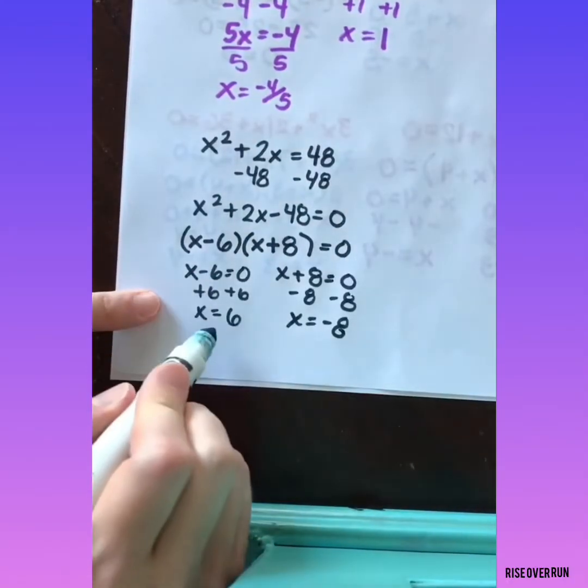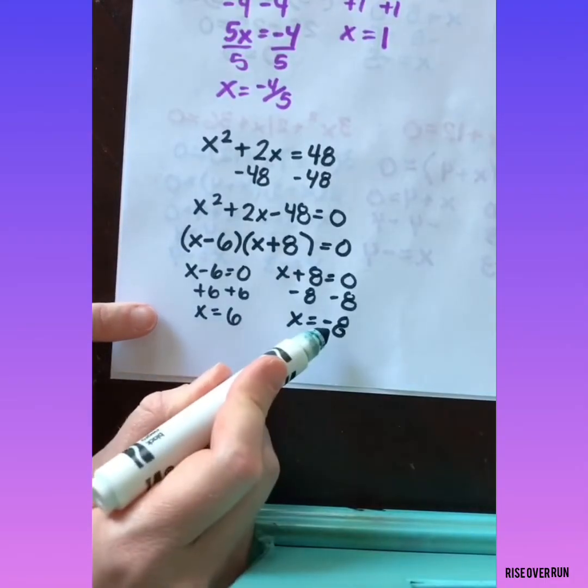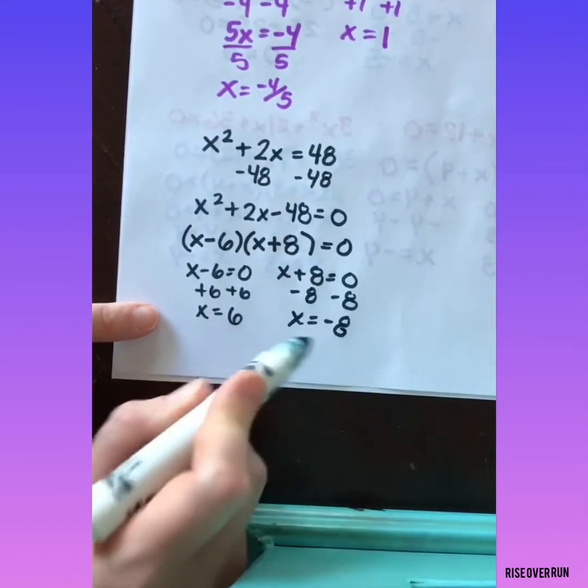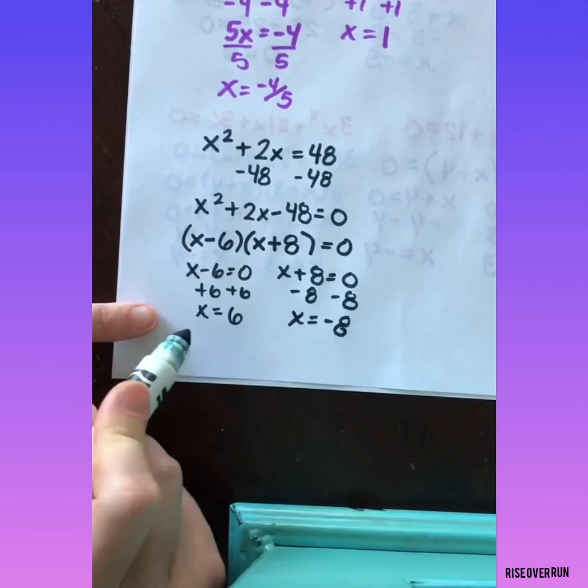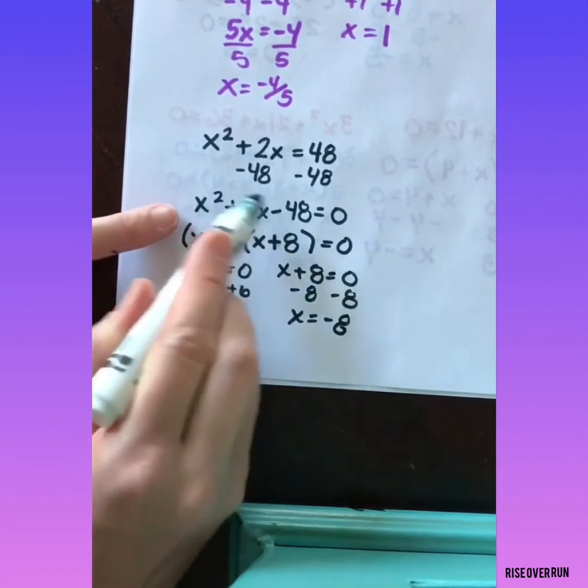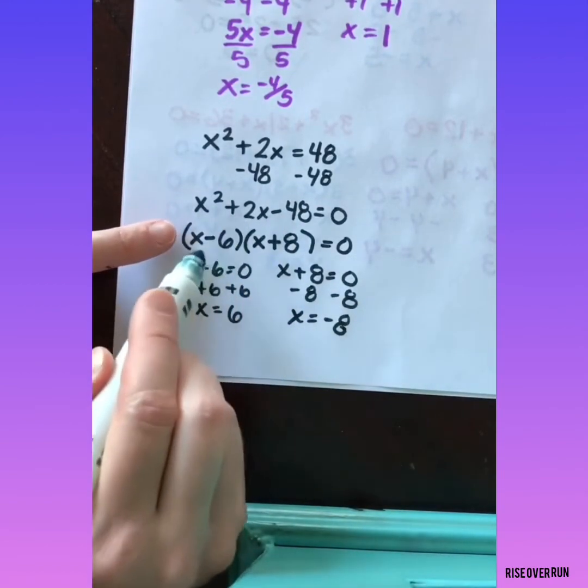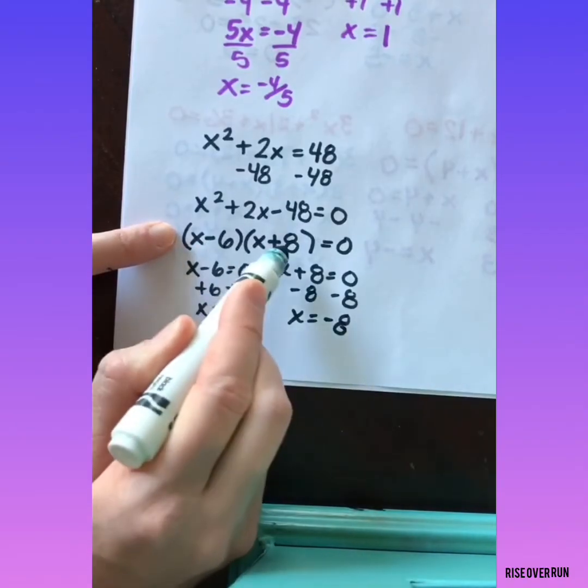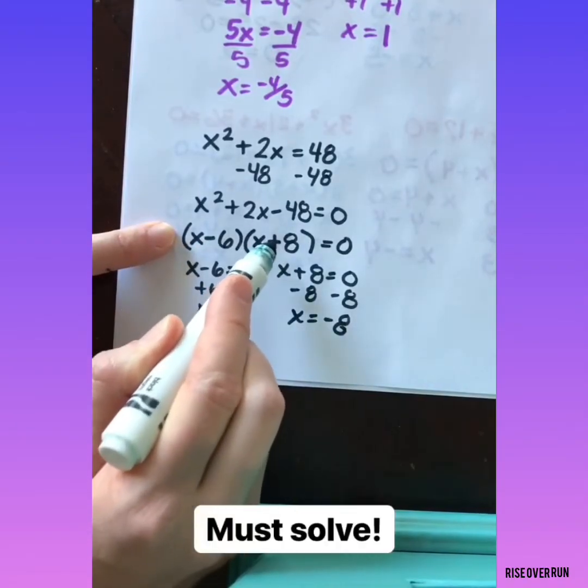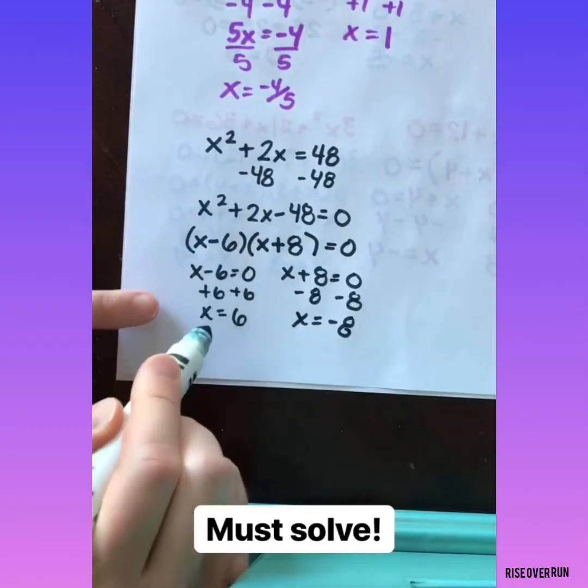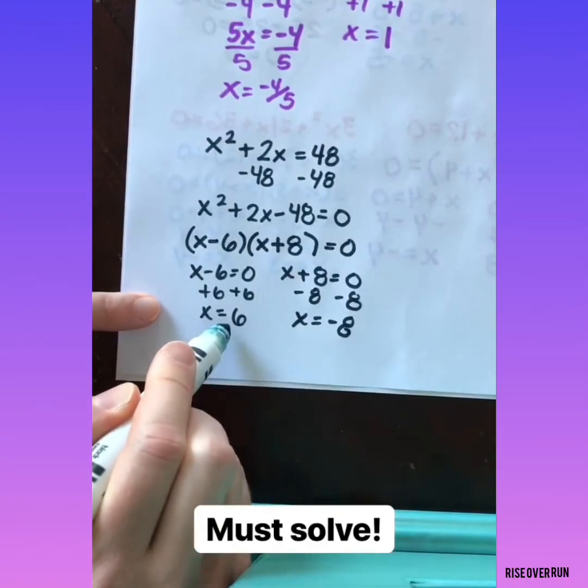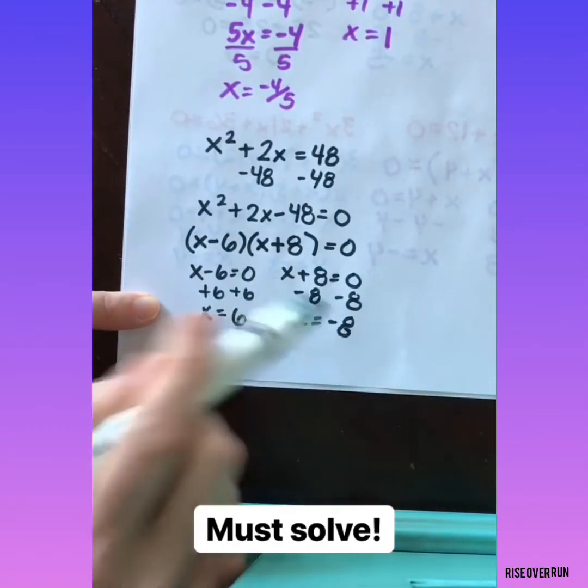When I solve each one, I get a positive 6 and a negative 8. Be very careful because the sign can make your answer correct or incorrect. Some students get in a hurry during this step and think their solutions are negative 6 and positive 8. That's incorrect. You have to solve to find your final solutions, which are positive 6 and negative 8.